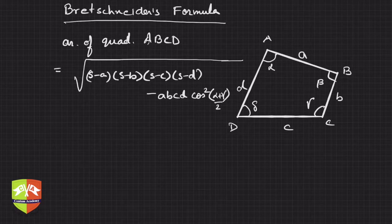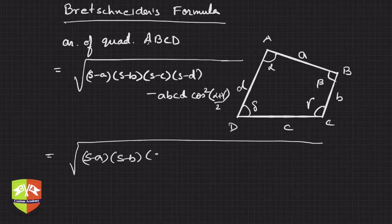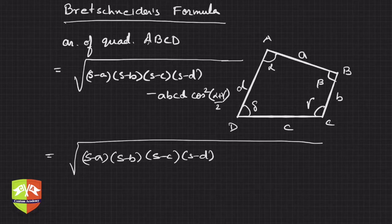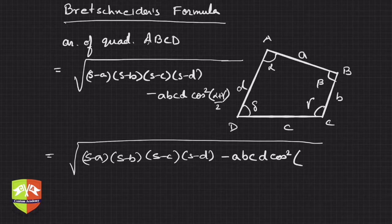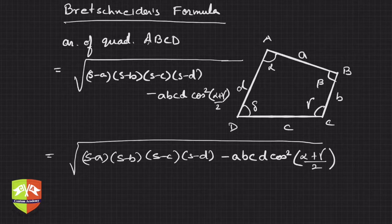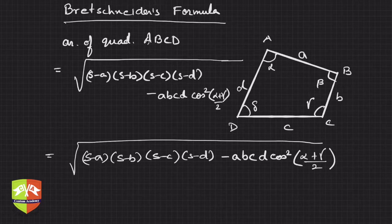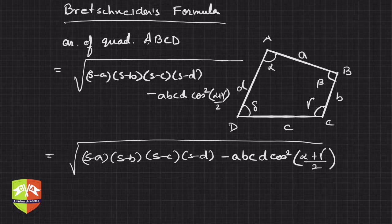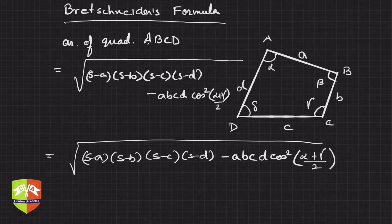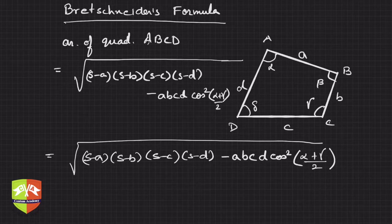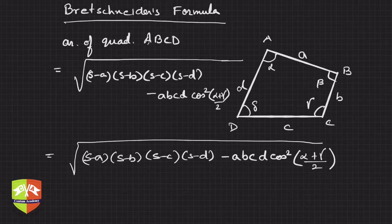The area is square root of [(s-a)(s-b)(s-c)(s-d) - abcd·cos²((α+γ)/2)]. You could have taken beta and delta also; the result will be same because alpha plus beta plus gamma plus delta is 360 degrees. If you know about trigonometry, then you know cos(180-θ) = -cosθ, and when you square it you get the same thing. If you know opposite angles of a quadrilateral and the sides, then you will be able to find out the area of the quadrilateral.